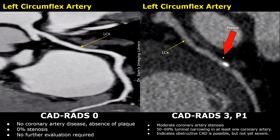Here is another case of CADRADS 3. A hyperdense plaque is present in the left circumflex artery and half of the lumen seems narrowed. Sometimes the classification can become confusing whether to grade it as CADRADS 2 or 3. It is better to use the higher grading because better management and treatment will be done and it can prevent a future cardiac event.